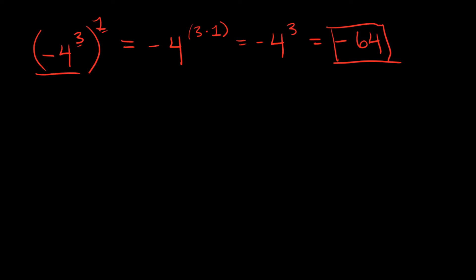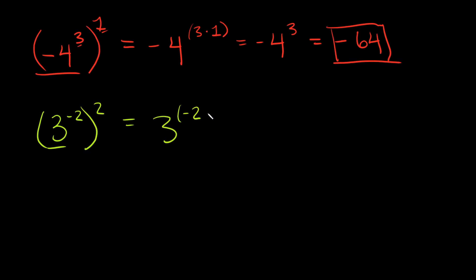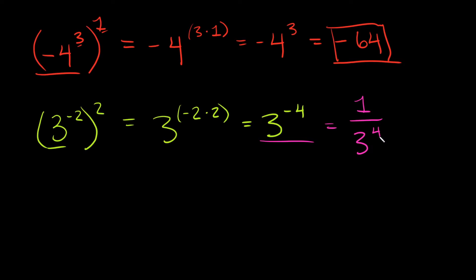Now what if we had three to the negative two, and this whole thing squared? We keep the base and multiply the exponents: negative two times two. This equals three to the negative four. When you have a negative exponent, you move the whole thing to the denominator and make the exponent positive. So we get one over three to the fourth, which equals one over 81.